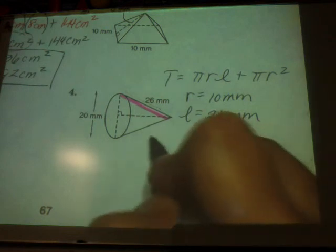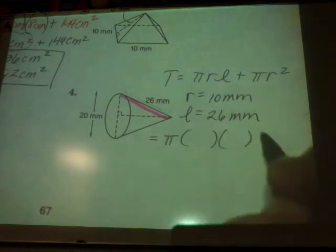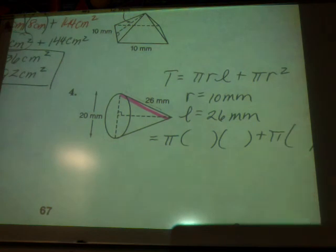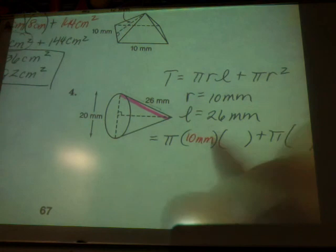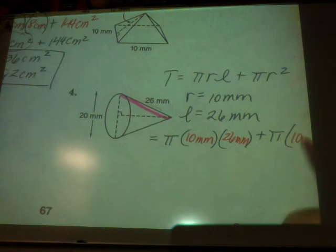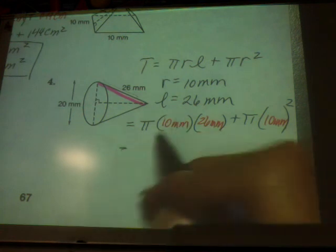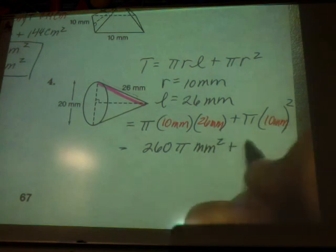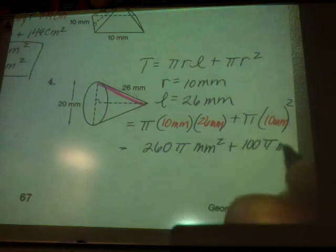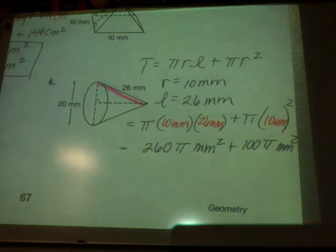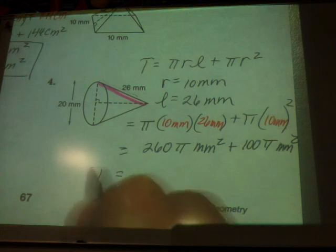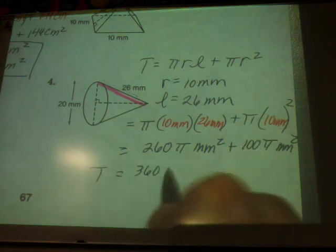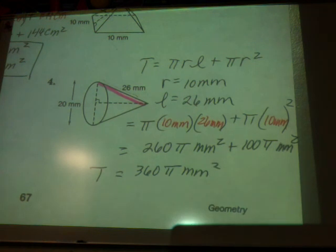So we're ready to plug and chug. I'm going to leave π as π until the very end. So my radius goes in here is 10 millimeters. My slant height is 26 millimeters. And my radius is 10 millimeters. So 10 times 26 gives me 260π millimeters squared plus 10 squared is 100π millimeters squared. If I add those together, my total surface area is 360π millimeters squared.